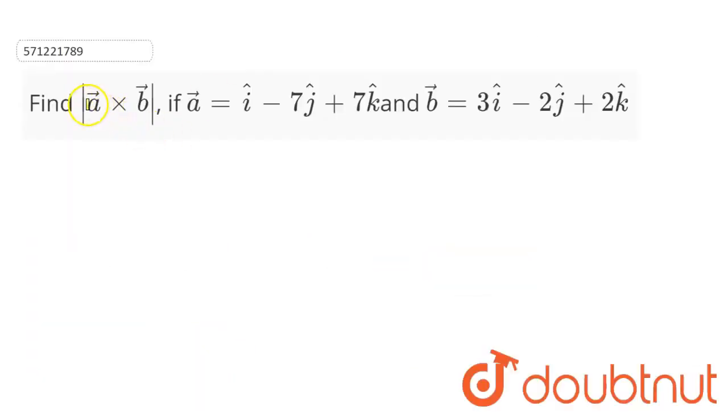Now, we have to find the magnitude of vector A cross vector B. Vector A has been given as this one, and vector B has been given as this one.